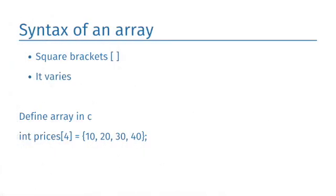Syntax of an array. The array is defined using square brackets. It varies from language to language but square brackets are used to define an array. Let us see how we can define array in C.